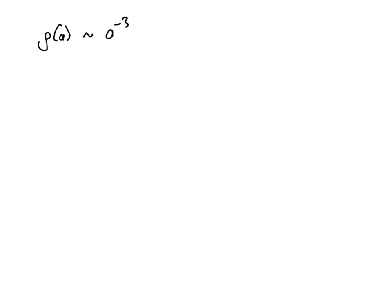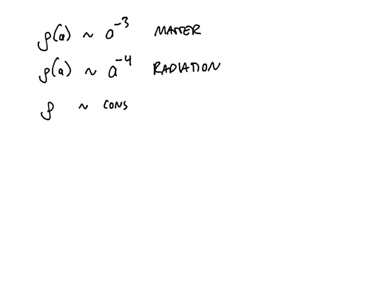From the conservation equation we showed that ρ(a) ∝ a⁻³ for matter — the energy density goes down like the cube of the scale factor, just like stuff in a bigger box. For radiation ρ ∝ a⁻⁴ because both the number of photons and the energy of each photon decrease. For vacuum energy ρ is a constant — a weird fact with nothing more intuitive to say about it.